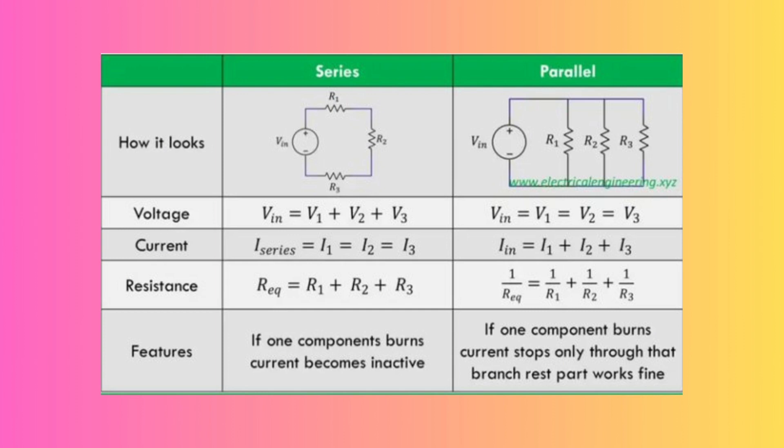The total voltage in a series circuit is equal to the sum of all the voltages across each load, while in a parallel circuit the total voltage is the same anywhere across two points in the circuit. The total current for a series circuit is the same as the current in each individual load, while in a parallel circuit it is equal to the sum of all the currents in individual loads.